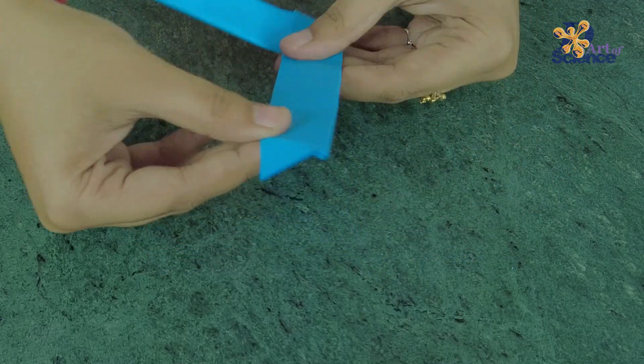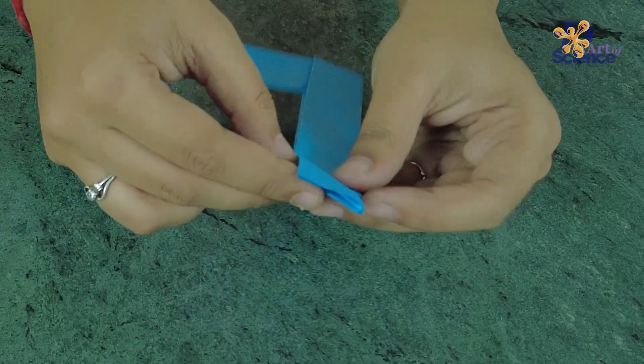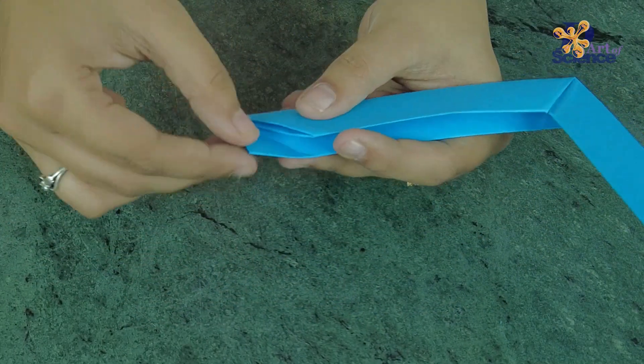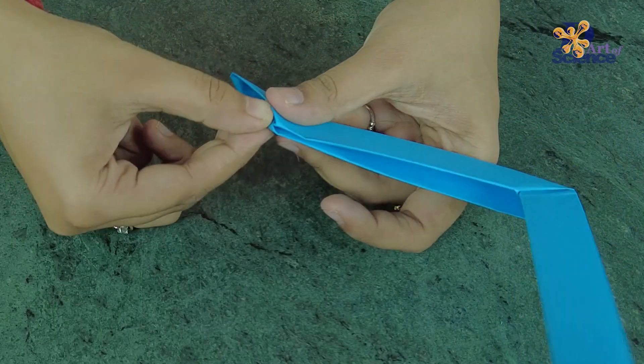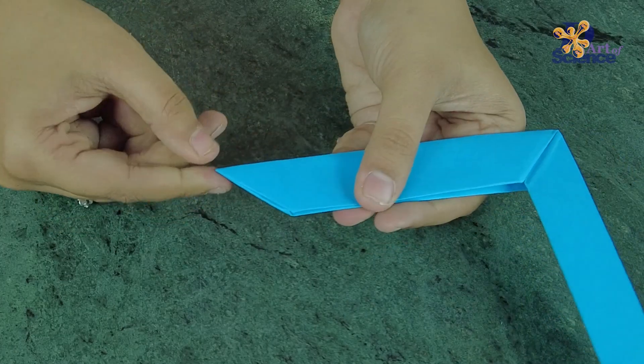This way we can make a little pocket for the other triangle to tuck in. Repeat the same for the other side as well.